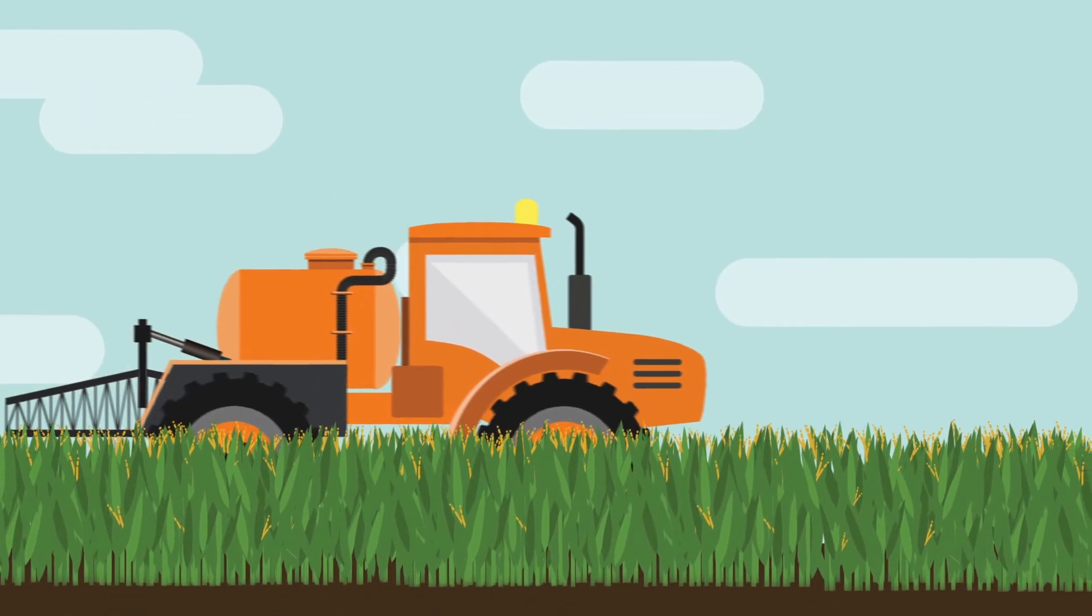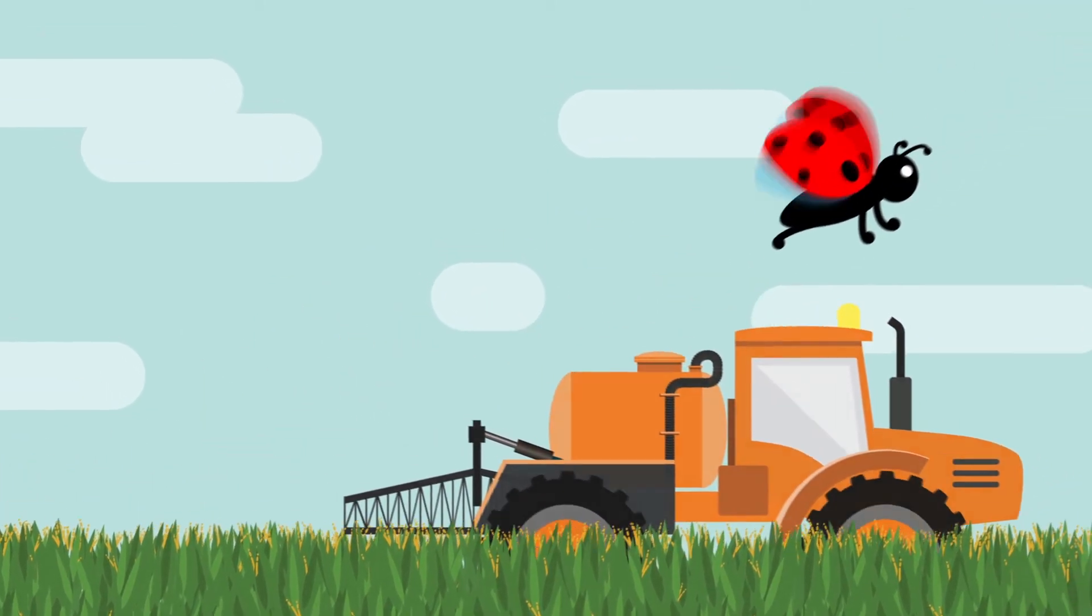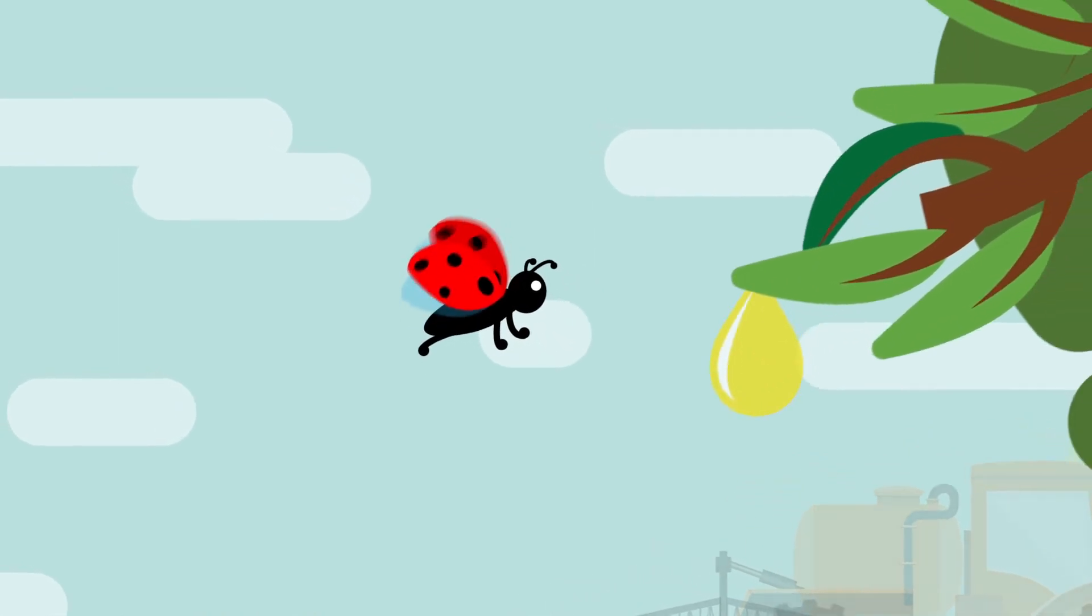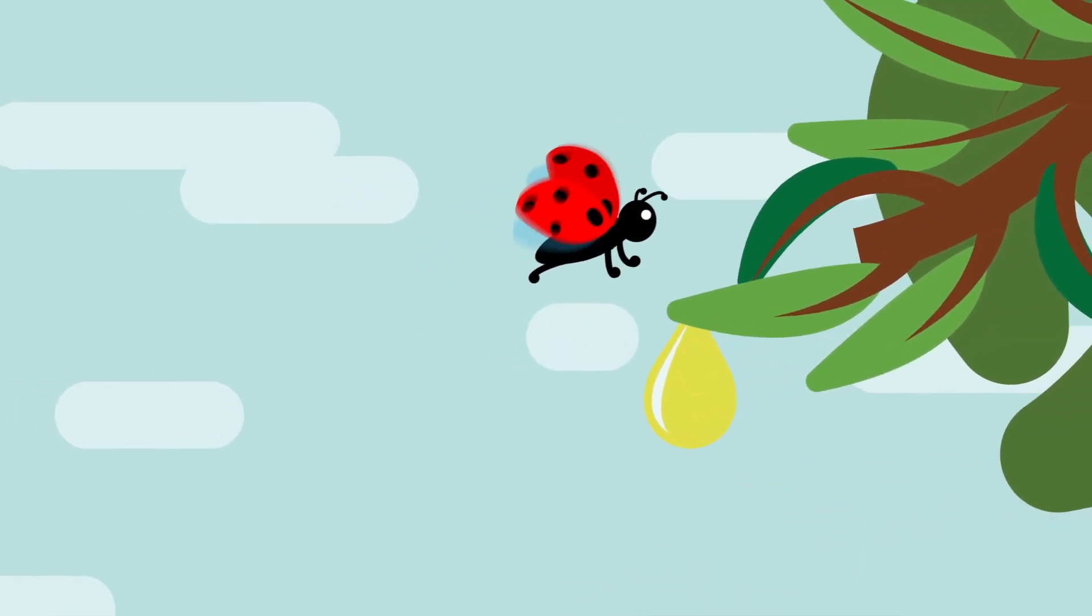BT is another type of soil bacteria used in pesticides and biotech crops. BT pesticides can be used by all farmers to protect their crops without hurting beneficial insects.